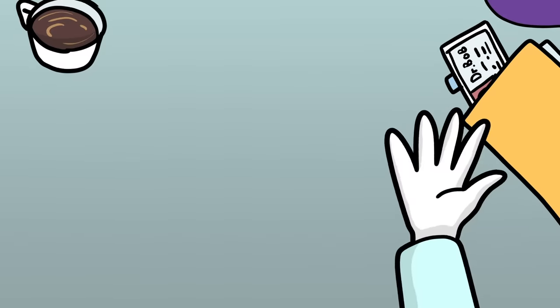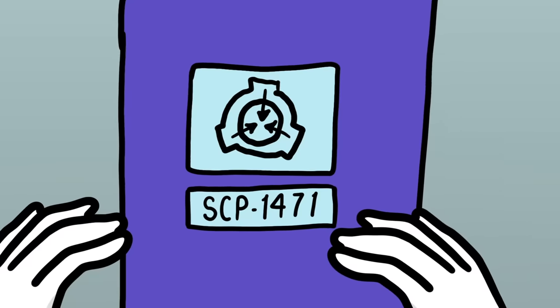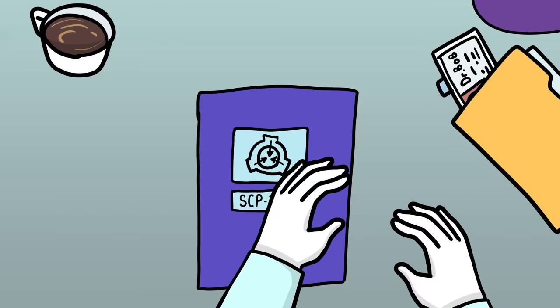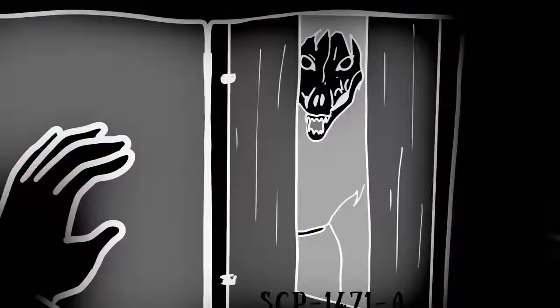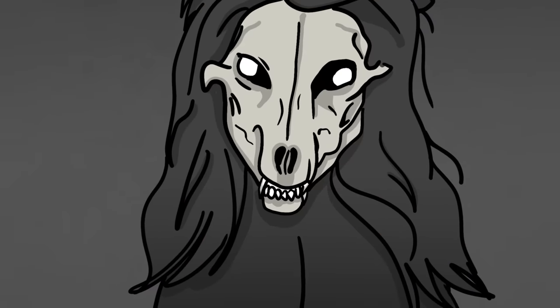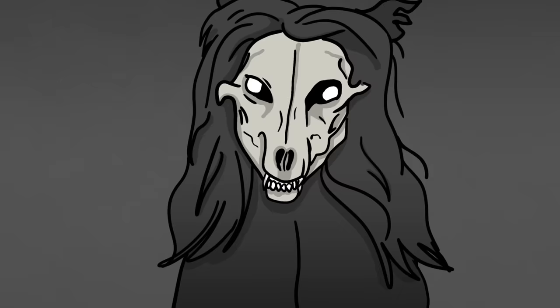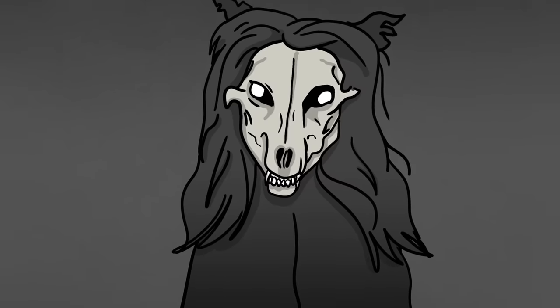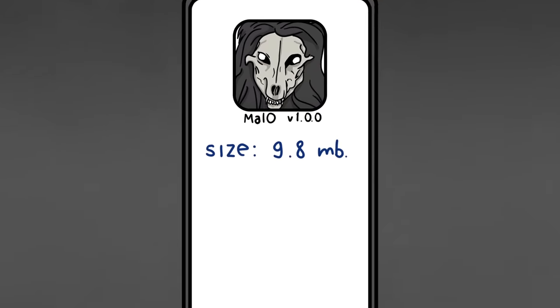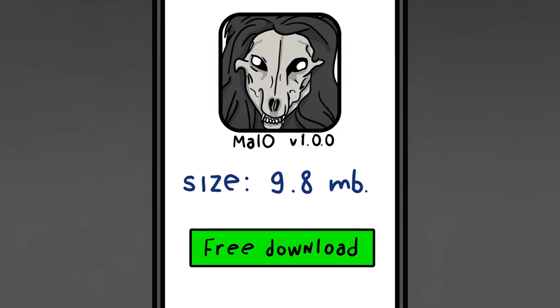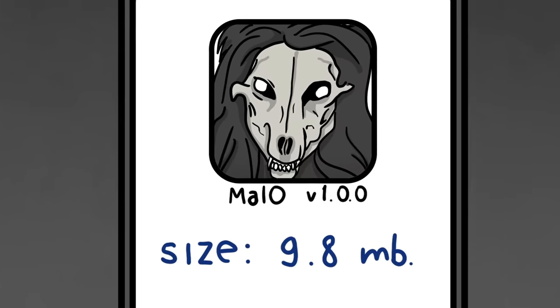Hi, I'm Dr. Bob, and this is SCP-1471, also known as Mallow version 1.0.0. SCP-1471 is a very interesting anomaly that's not really a creature, or a monster, or even an object. It's a mobile app. It's 9.8 megabytes in size and is freely available in online application stores where it's listed under the name Mallow version 1.0.0.